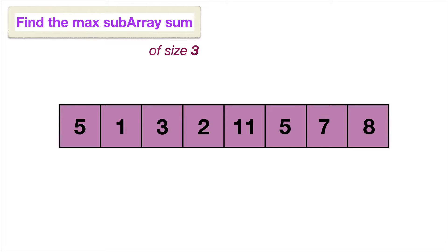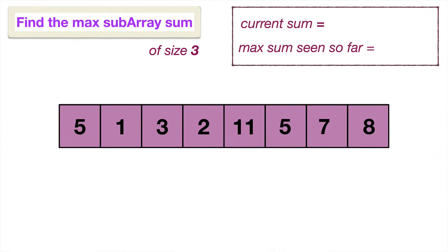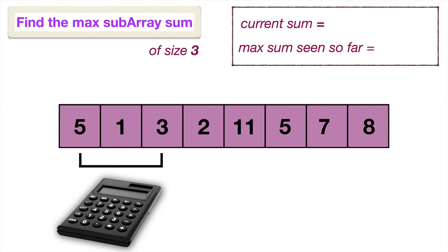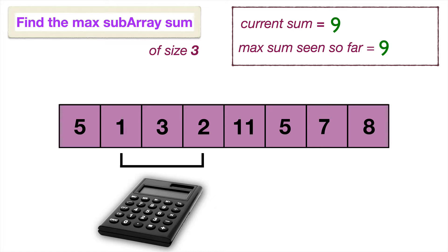Let's walk through the brute force approach. We'd create two variables: one for the current sum and one for the maximum sum seen so far. Starting with the first three elements, five plus one plus three gives us nine as our current sum. Since we haven't seen anything greater, we update the maximum sum to nine. Moving to the next index, one plus three plus two gives us six. Six isn't greater than the maximum sum, so we leave it alone.